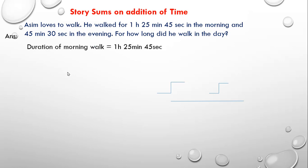As you can see, they are given duration of morning walk as 1 hour 25 minutes 45 seconds. Duration of evening walk is 45 minutes 30 seconds. They are asking for how long, which means we need to add these two durations of time.